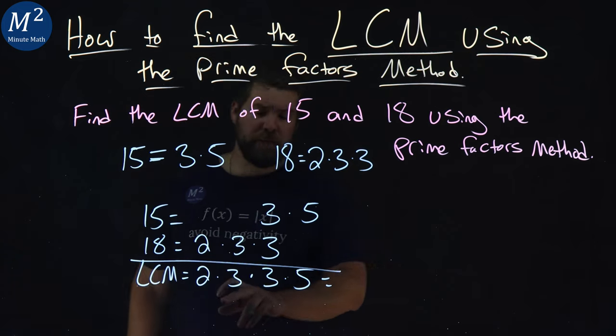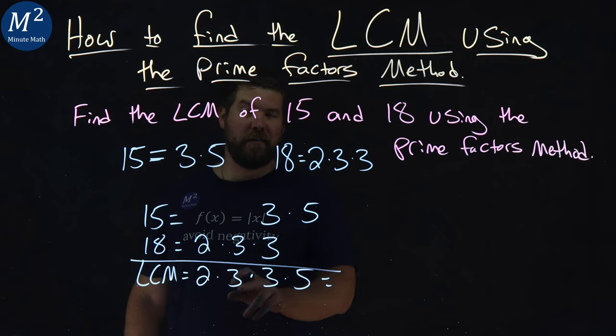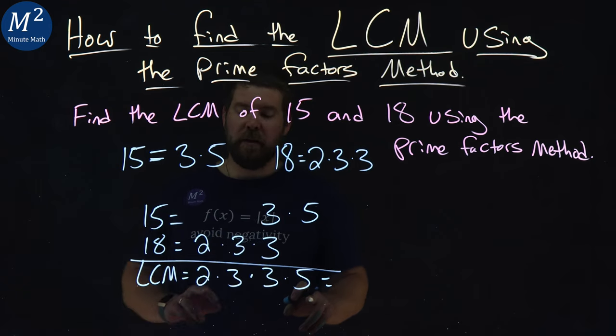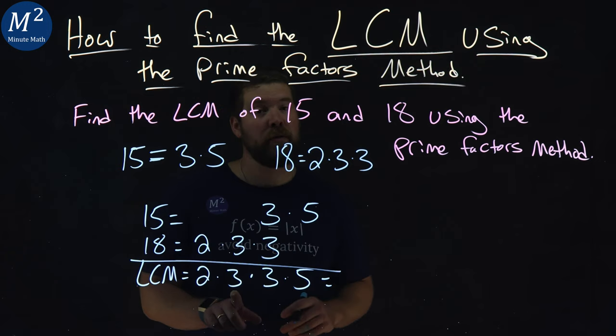What does that equal? Well, let's go through it here. 3 times 5 is 15, times 2 is 30, times the other 3 is 90.